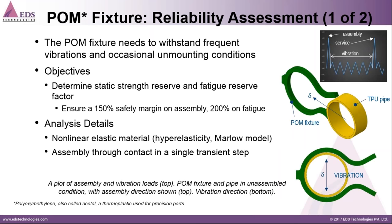The second workflow involves a POM fixture and a TPU pipe. POM — polyoxymethylene or acetal — is a thermoplastic used in precision parts requiring high stiffness, dimensional stability, and low friction. The pipe is made of TPU, or thermoplastic polyurethane, which is also extensively used in making these kinds of pipes. In this workflow, the POM fixture needs to hold the TPU pipe.